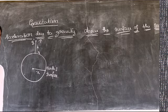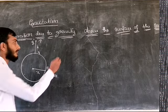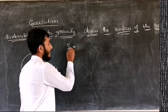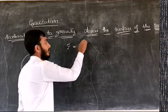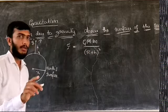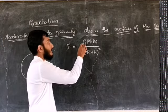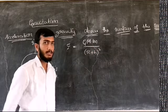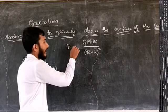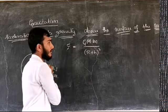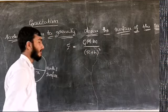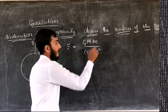So we write the expression for acceleration due to gravity. First I will write the expression for gravitational force using the universal law of gravity. The gravitational force F is equal to G times M times m divided by r plus h, the whole square — where M is the mass of the Earth, m is the mass of the given body, r is the radius of the Earth, and h is the distance from the surface to point P. This is equation number one.